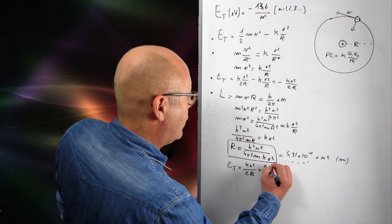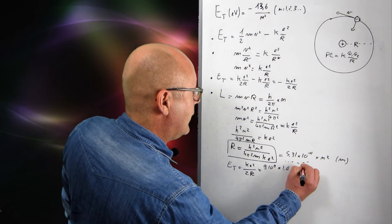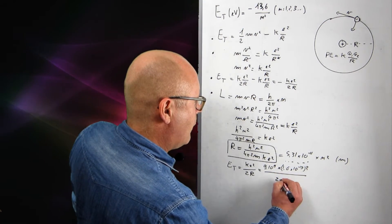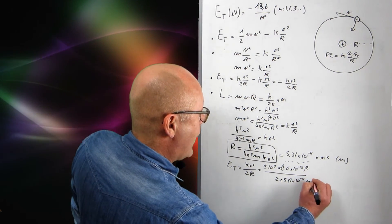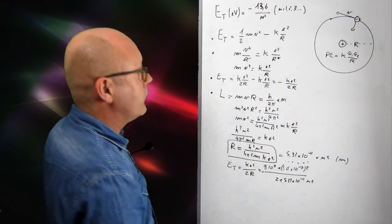So, 9 by 10 to the 9, by 1.6 times 10 to the minus 19 data-squared, divided by 2, multiplied by 5.31 by 10 to the minus 11, n-squared. Oh, and I mustn't forget the minus. Here.